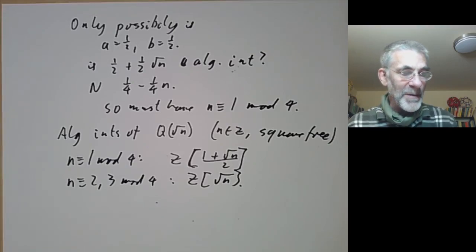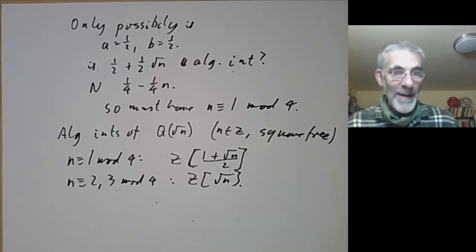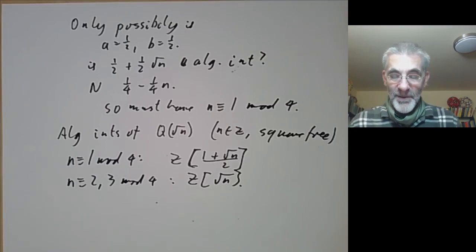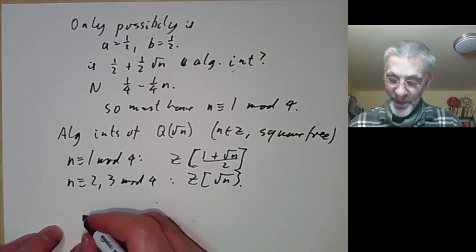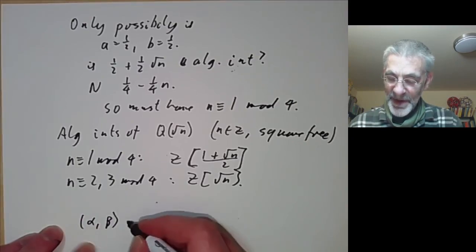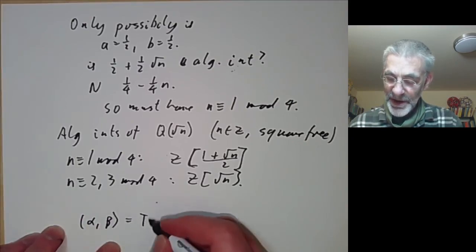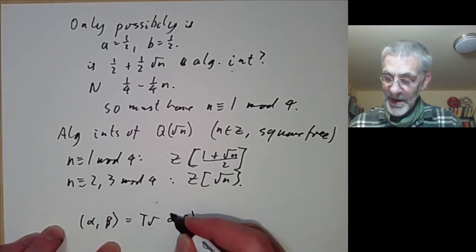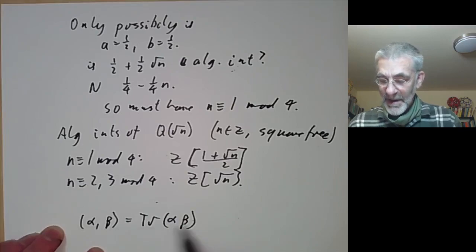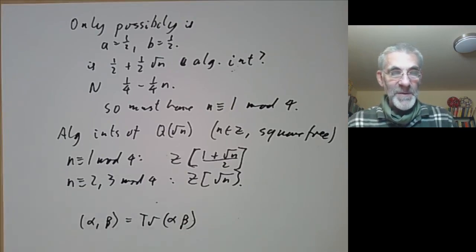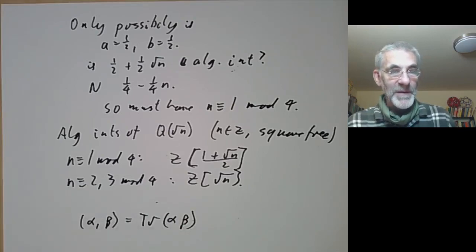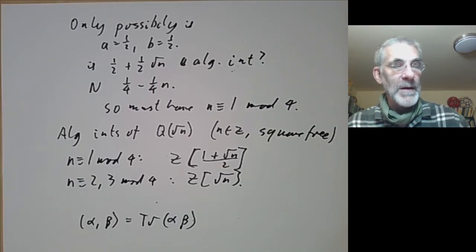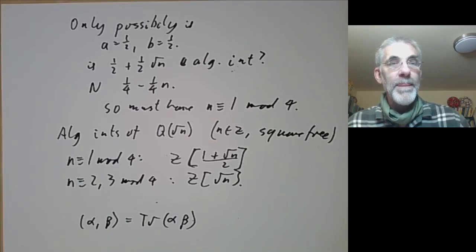In the next lecture we will look at another application of the trace: defining a bilinear form on M by setting (alpha, beta) = trace(alpha·beta). This bilinear form turns out to be really useful.